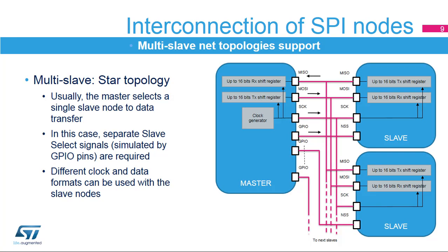When the SPI network includes more than one slave, a star topology is commonly used when all the SCK, MOSI, and MISO signals are interconnected. Usually, the master communicates with one slave at a time, since just one slave can transmit data back to the master through the common MISO pin. When reading from slaves is required, a separate slave select signal from the master has to be provided to each slave node, so the master selects just a single slave for a communication session. When separate slave select signals are applied, a different SPI data and clock format configuration can be used optionally for the slave nodes.